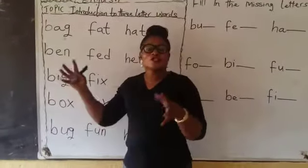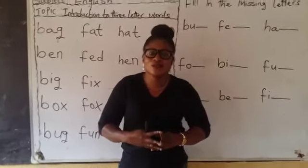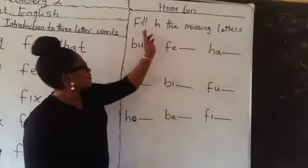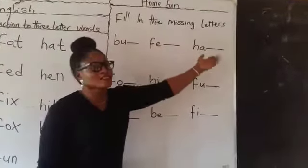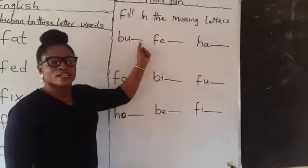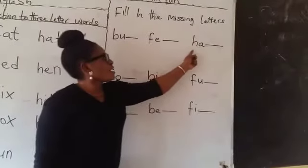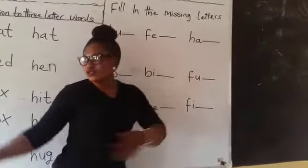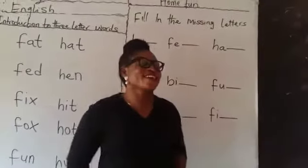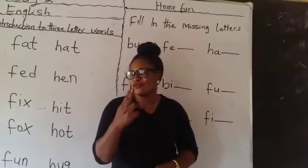This is how to do what? To blend three-letter words. We are still coming with more. So let's go to our homework. They say: fill in the missing letters. This is what? Ba. So what are you going to fix here to give you three-letter words? This is what? Fe. You fix it. Ha. You look for it the way I did it. Did you enjoy this lesson? I will come back again. I miss you. Please stay safe. I love you all.